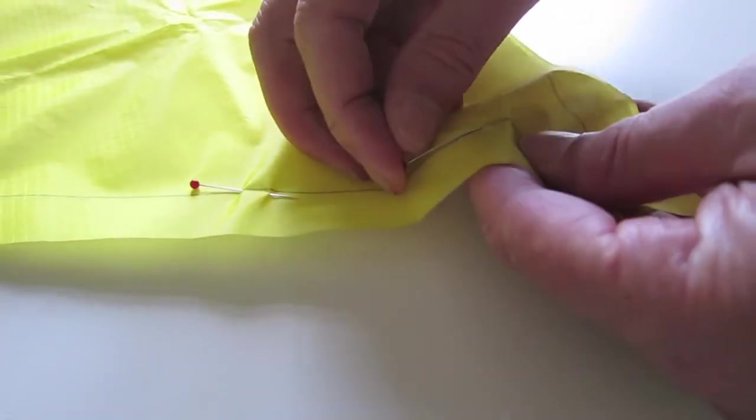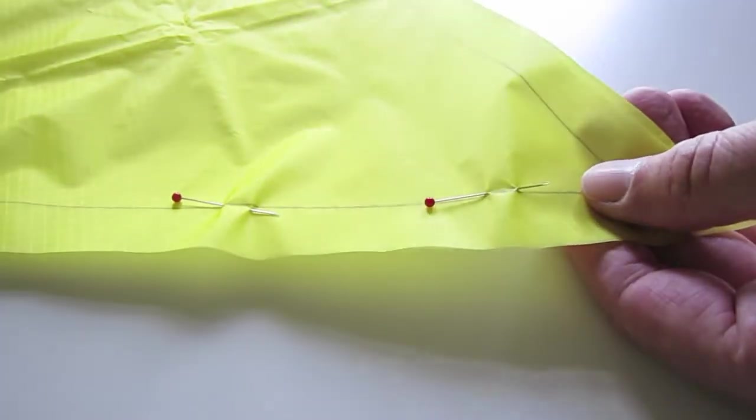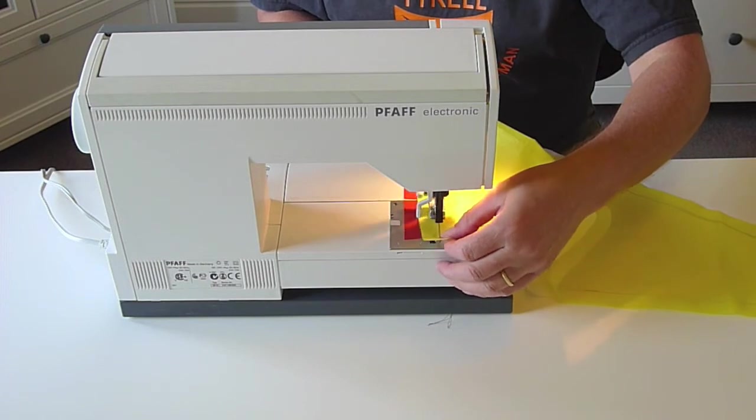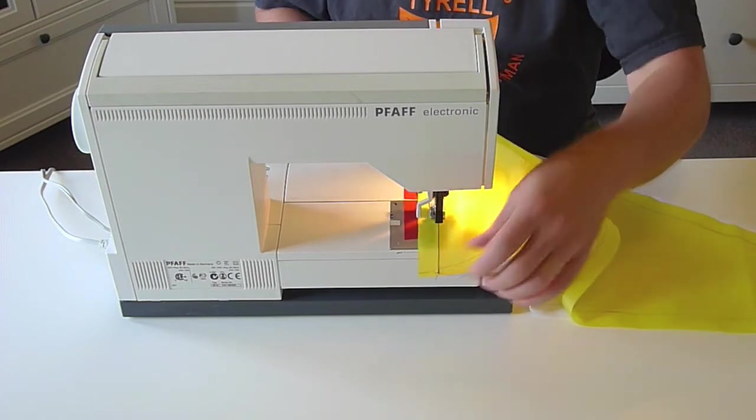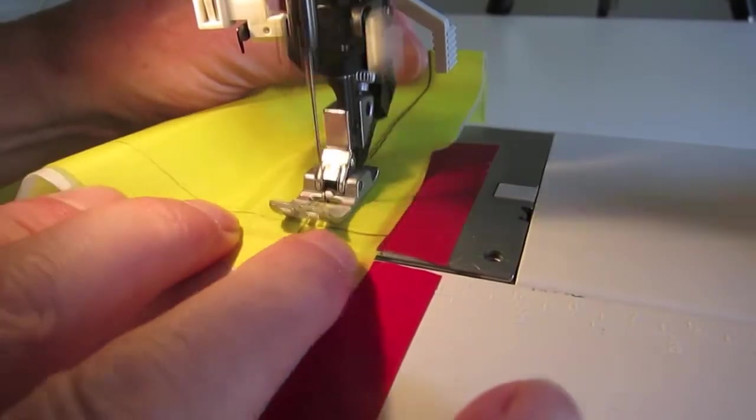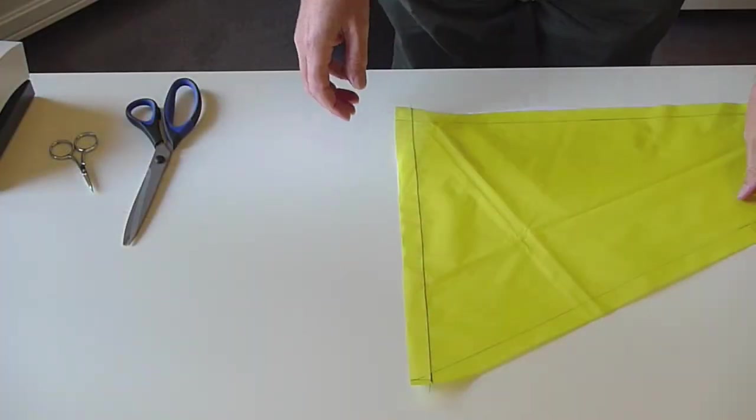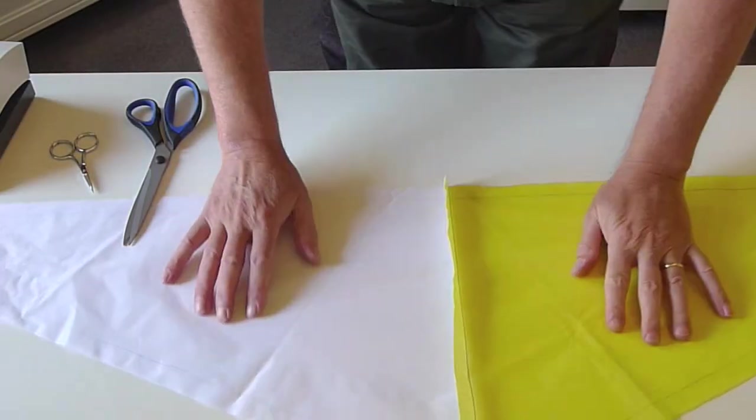Some people use tape or glue but pins work fine for me, a lot less messy too. And you just sew a straight stitch along the sewing line. Now open them out and you can just sew that seam down flat.